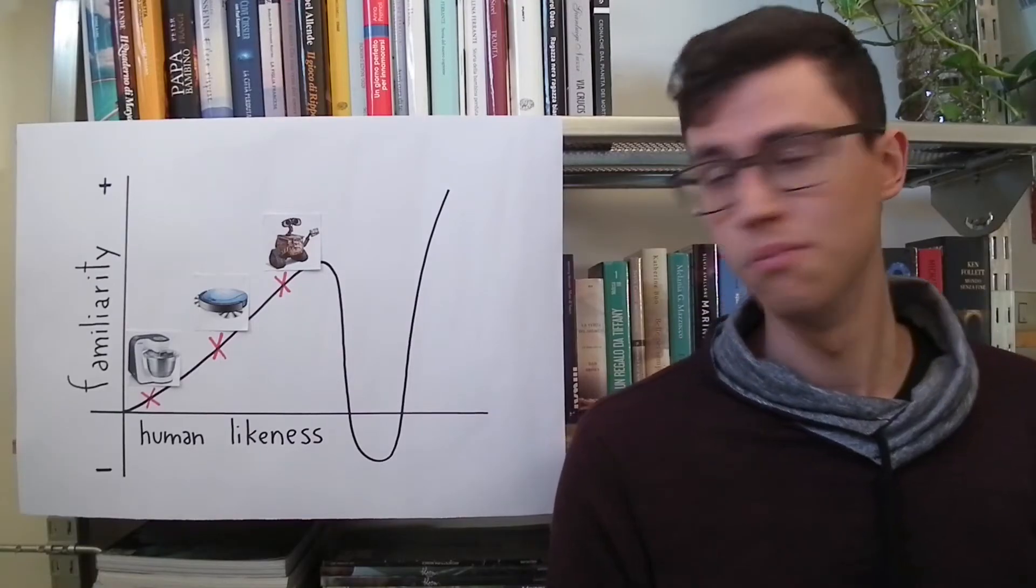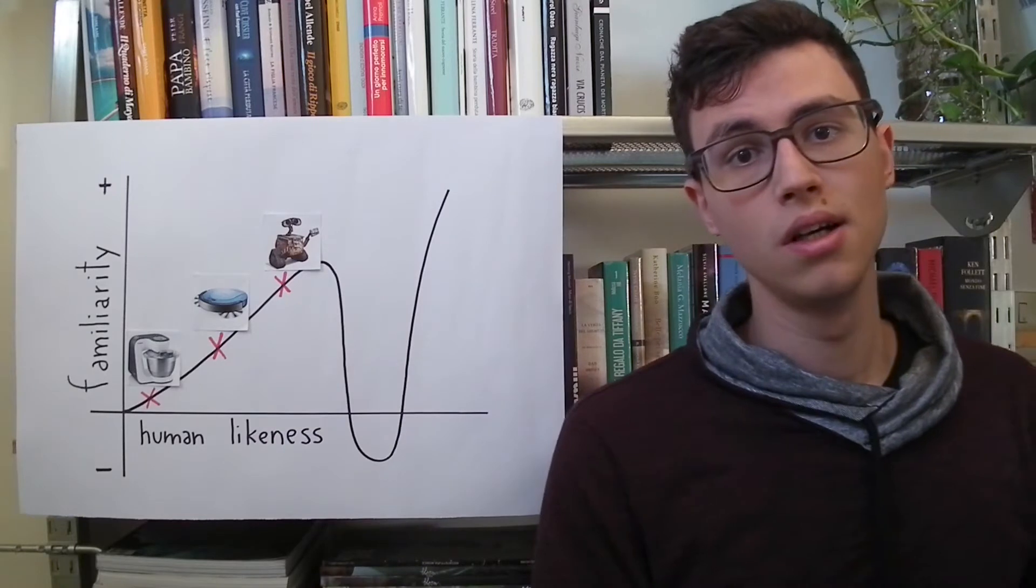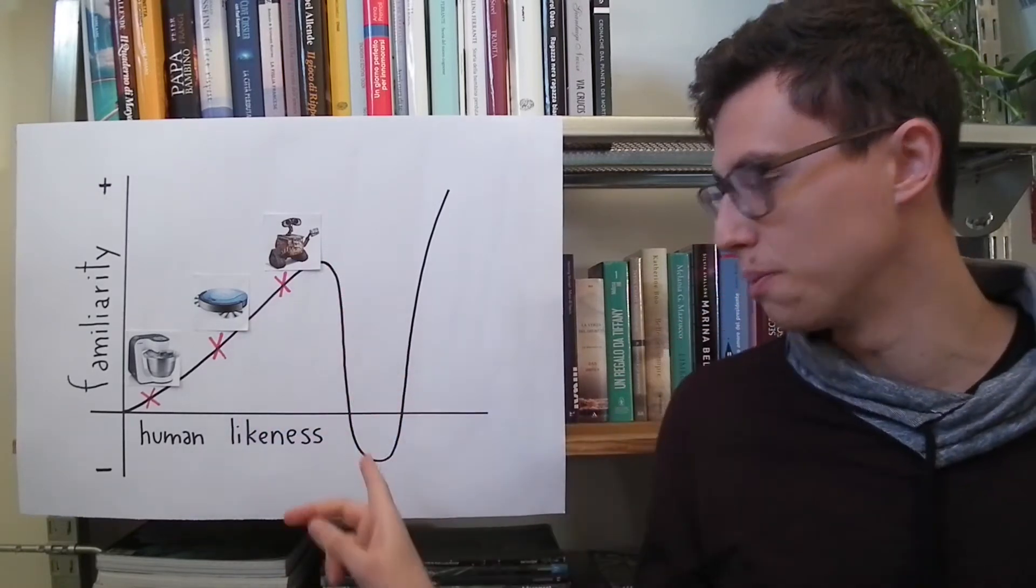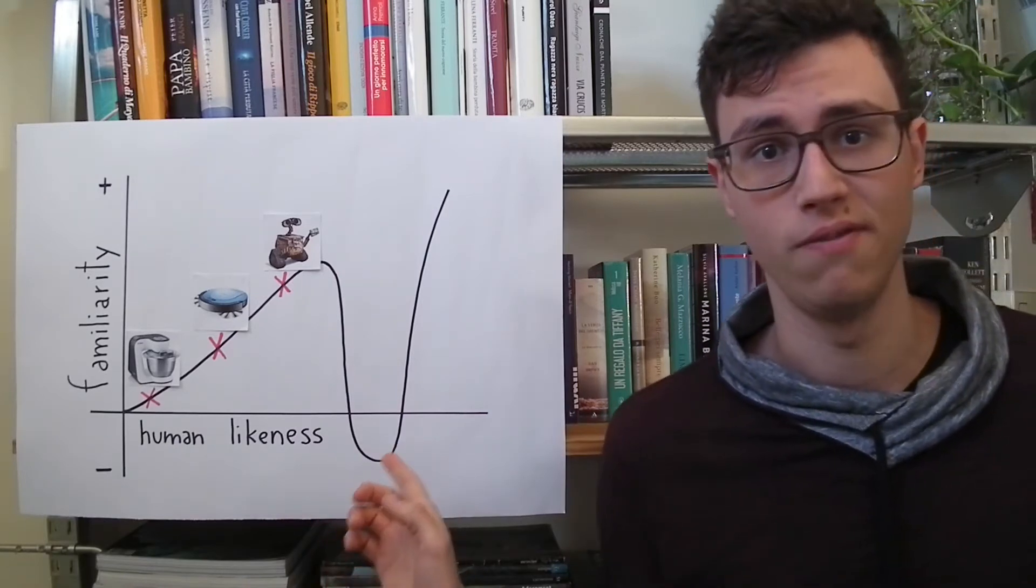Increasing human likeness even more, which can mean adding hair, skin to the robot, then the affection for the robot dramatically drops in the infamous Uncanny Valley.